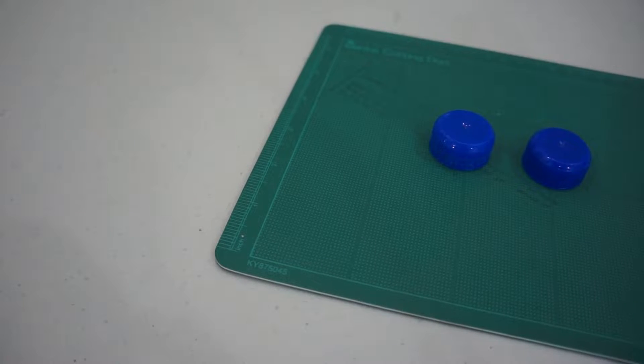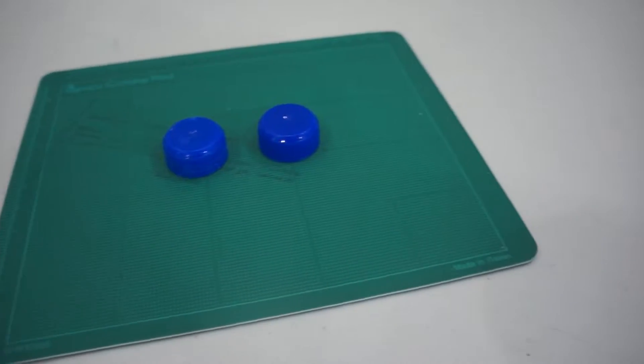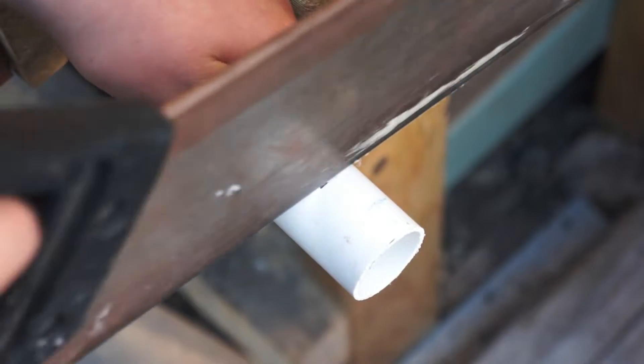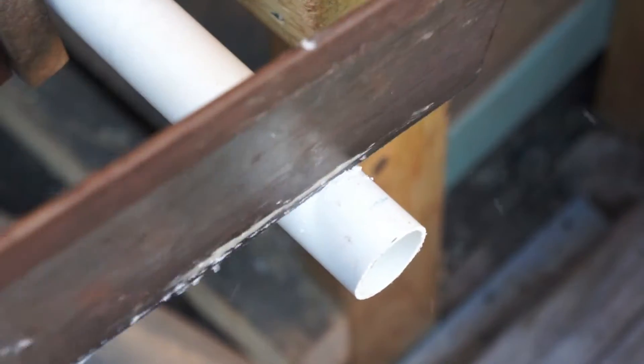Start by getting two bottle lids that fit your soft drink bottles. Then cut a 30mm long piece of a 30mm inner diameter PVC pipe.